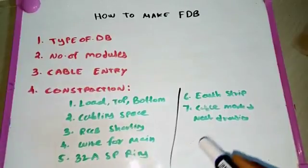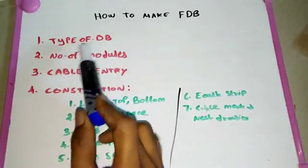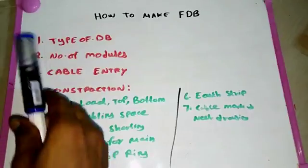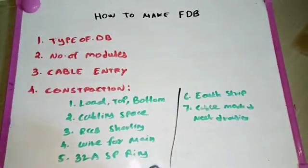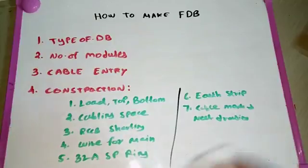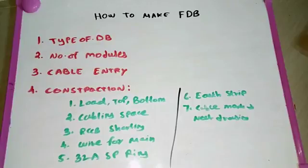The first thing is the type of DB — what kind of DB we need. There are weatherproof DBs, row type DBs, and some special split type DBs available. Row type DBs come in single row, two row, four row, five rows, etc. Weatherproof DBs use enclosures like 800x600x200. Split type DBs are already constructed with splits, so we simply install the breakers and connect the wire.